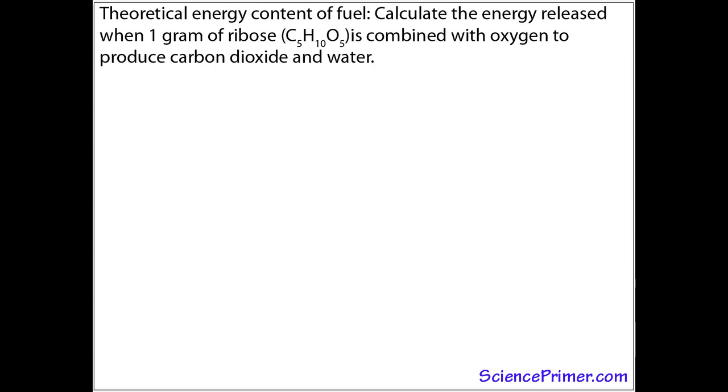There are quite a few steps in this process, so we'll work through them one at a time. First, let's take a look at the equation we're going to be using. Here is a ribose molecule. We are combining it with molecular oxygen to produce carbon dioxide and water. We're going to do this in four steps.